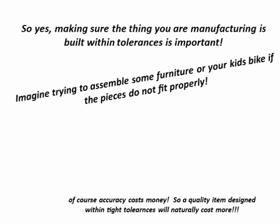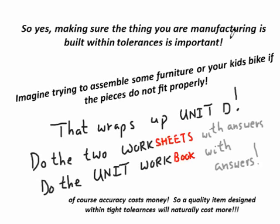So that pretty much wraps it up. So making sure the thing you're manufacturing is built within tolerances is important, especially since accuracy costs money. So if you want a really quality item that's built within nice tight tolerances, like a Mercedes or a BMW, it's going to naturally cost more. Imagine trying to assemble some furniture or maybe your kid's bike if the pieces don't even fit properly. So that wraps up the unit. Do the worksheets. You have two worksheets that have answers. And do the unit workbook. So there's a workbook, a bunch of questions from previous exams from the province, and it's got all the answers too.